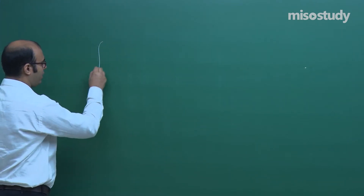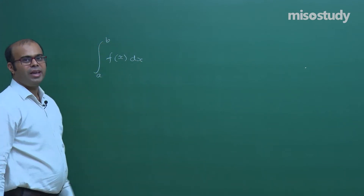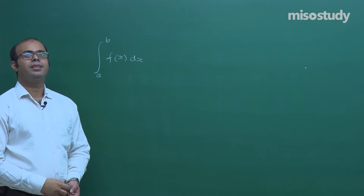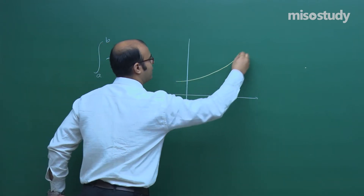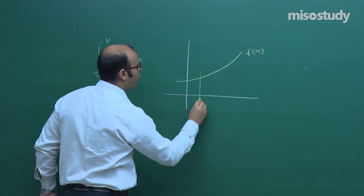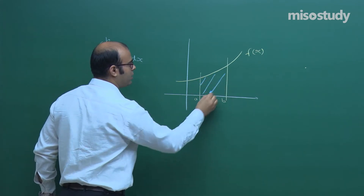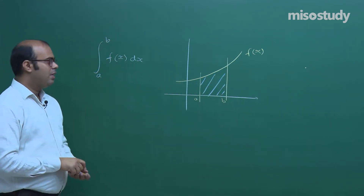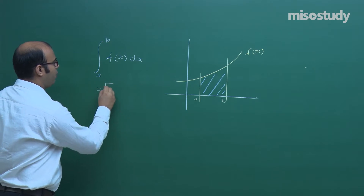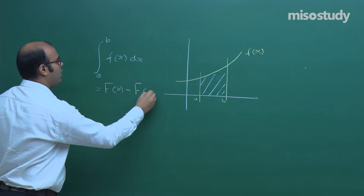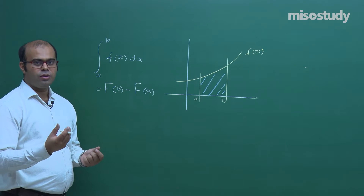If we take a function f(x) and integrate it from a to b — let us suppose f(x) is a positive function — we are taking the graph above the x-axis from ordinate a to ordinate b. The area enclosed is this shaded region. This gives a fixed value: F(b) minus F(a), where capital F is the antiderivative of small f. We put the limits and get a value in terms of a and b.